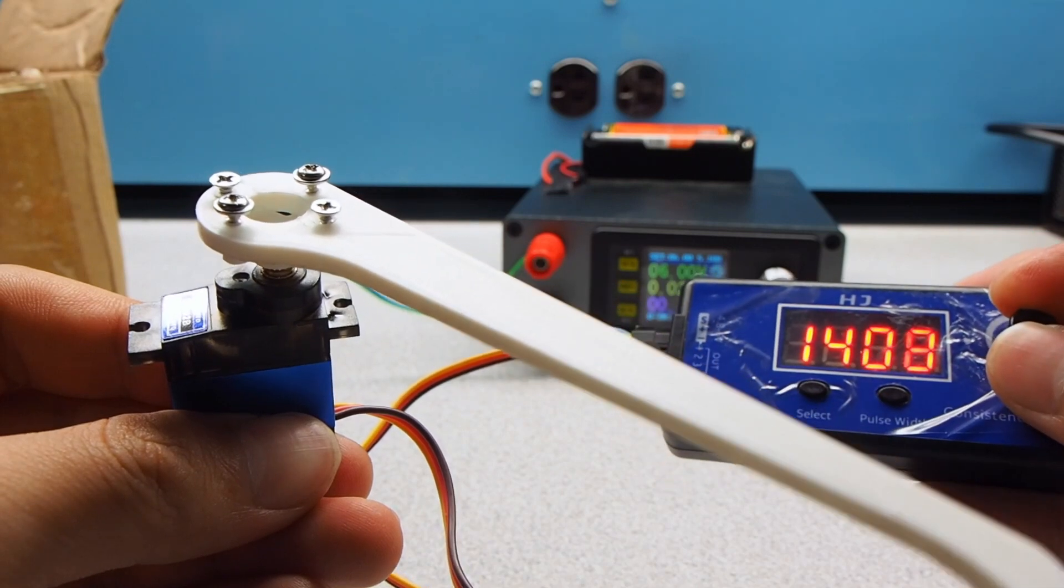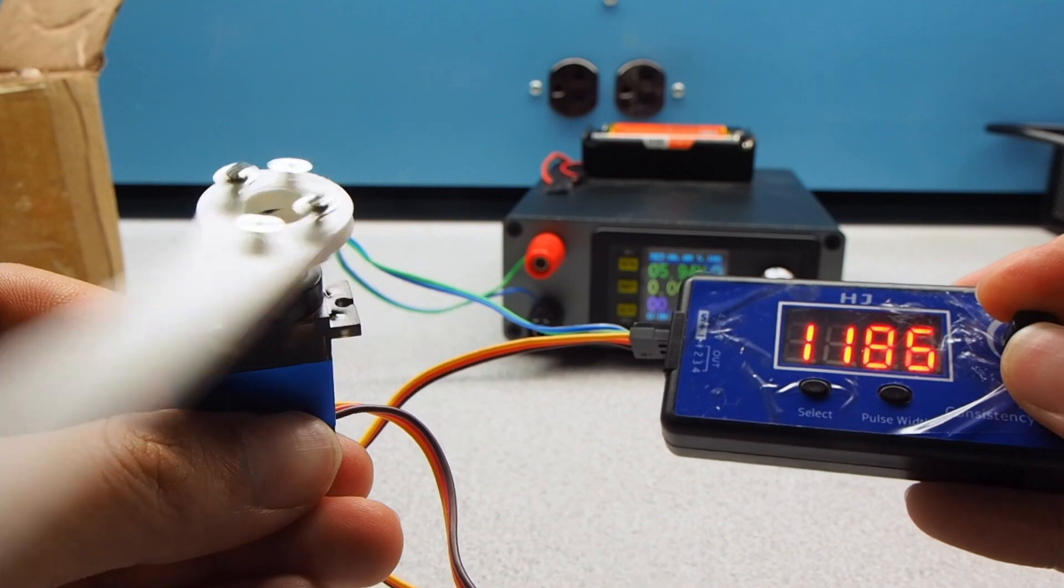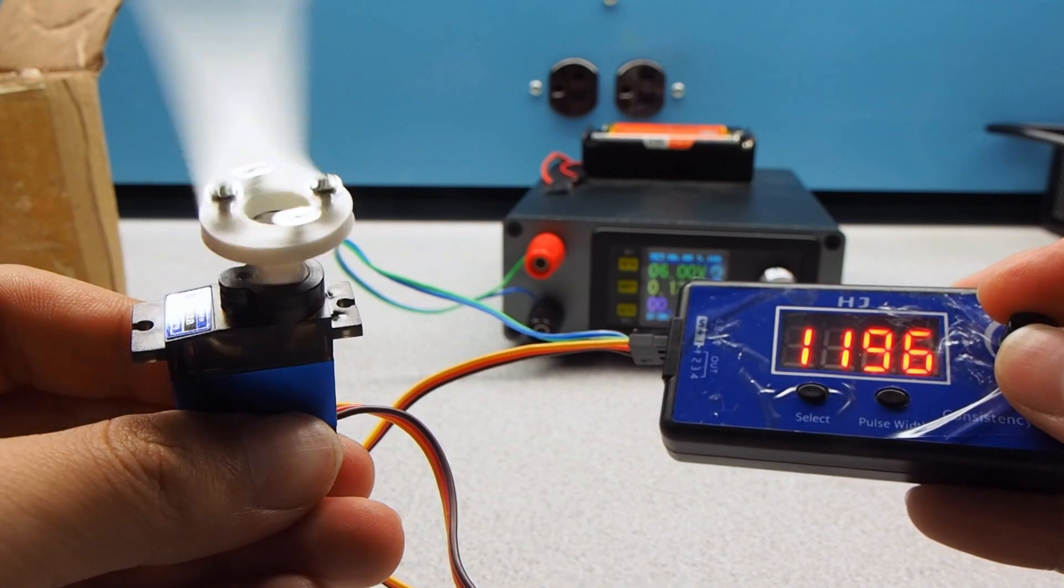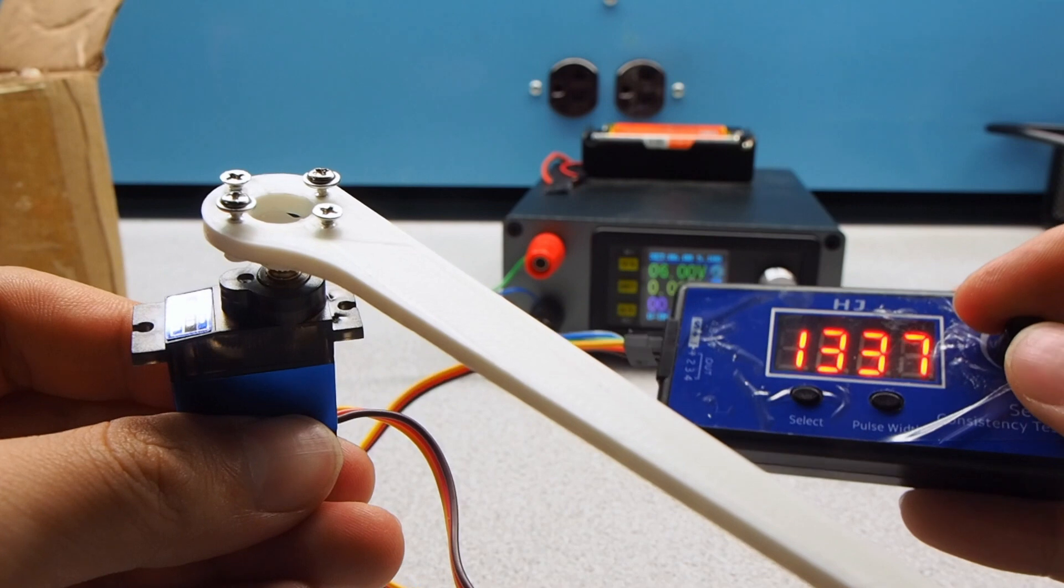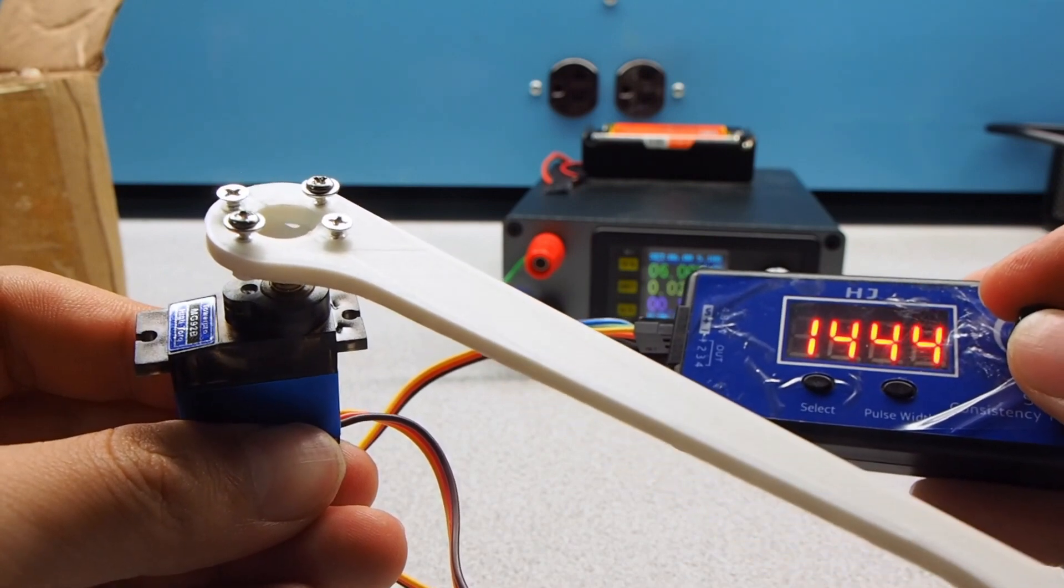So the controllable angle range is about 60 degrees. If you are making some robot that has a wheel, then this feature might be useful.